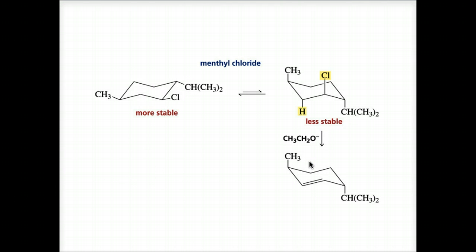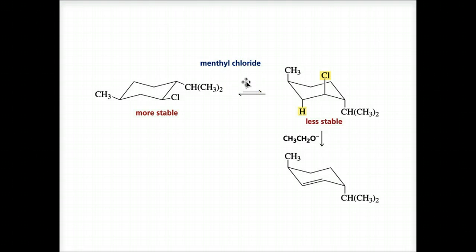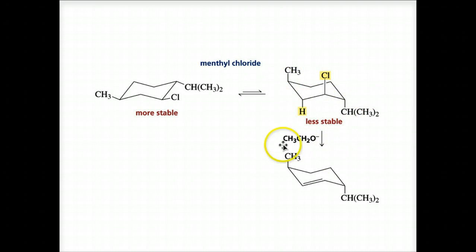In this case, the more stable conformer is not going to undergo the E2 reaction, whereas the less stable one on the right will undergo the E2 reaction. The conformer of menthyl chloride that undergoes elimination is the less stable conformer, because when the chloride and the hydrogen are in the required axial positions, the methyl and the isopropyl groups are also in the axial position — the less stable conformer undergoes the E2 elimination reaction.